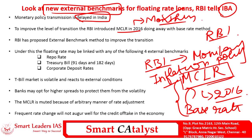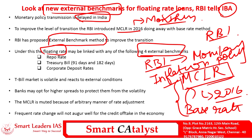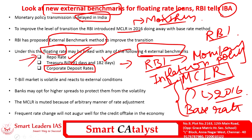Based on the MCLR rate, each individual bank fixes the rate at which it lends to customers. However, in order to ease monetary policy transmission further, RBI has now proposed a new rate called the external benchmark method. Under this external benchmark rate, it will be a floating rate linked to four external benchmarks: the repo rate, the 91-day Treasury Bill rate, the 182-day Treasury Bill rate, and corporate deposit rates.